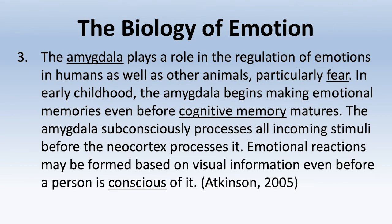The amygdala plays a role in the regulation of emotions in humans as well as other animals, particularly fear — the amygdala is the fear center. In early childhood, the amygdala begins making emotional memories even before cognitive memory matures. Emotional memory begins before cognitive memory, which is partly why we may not remember things from early on — it's more of an emotional experience. The amygdala subconsciously processes all incoming stimuli even before the neocortex processes it, so emotional reactions may be formed based on visual information even before a person is conscious of it.